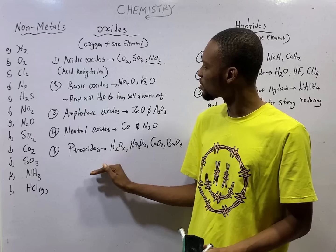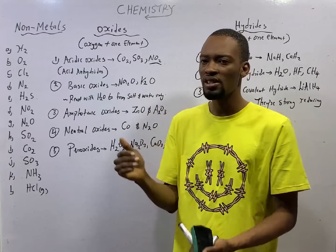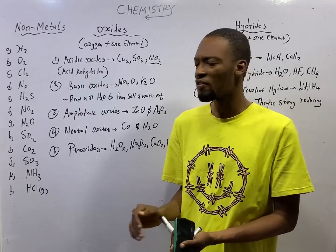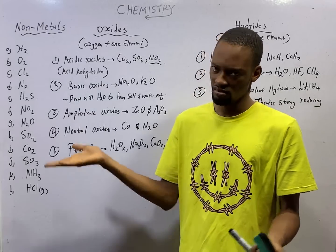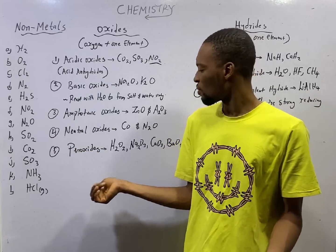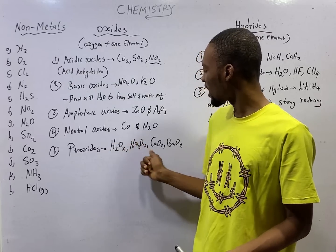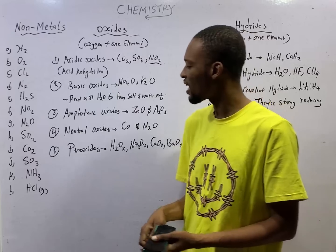H2O2 is hydrogen peroxide. H2O is hydrogen oxide. In that case, the oxidation state of oxygen is minus 2. But in peroxide, it is minus 1. Sodium peroxide, calcium peroxide, and barium peroxide are all peroxides.